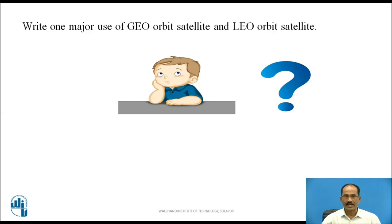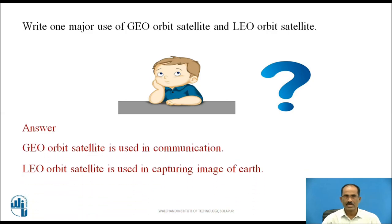This slide refers to a 'think and answer' activity: Write one major use of GEO orbit satellite and LEO orbit satellite. Pause the video and write your answer. The major use of GEO orbit satellites is in wireless communications. LEO orbit satellites are used in capturing images of the earth.